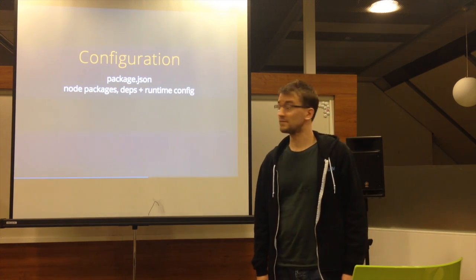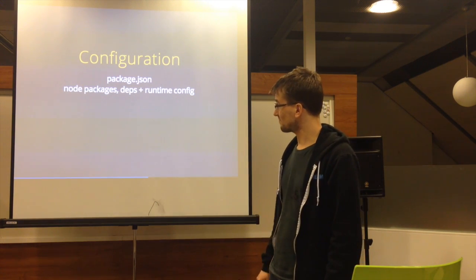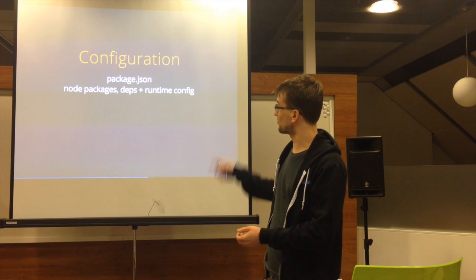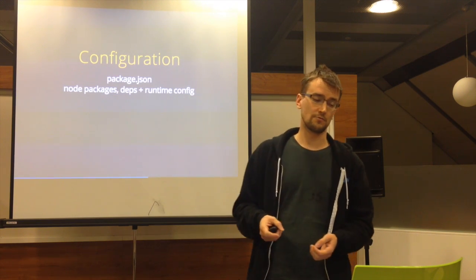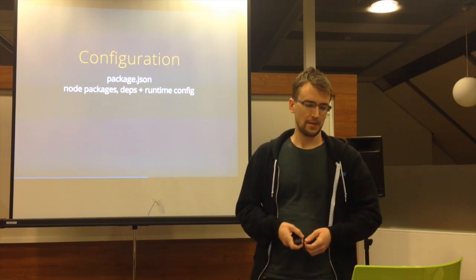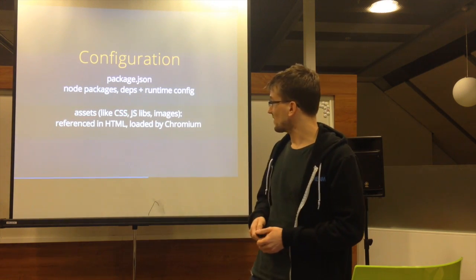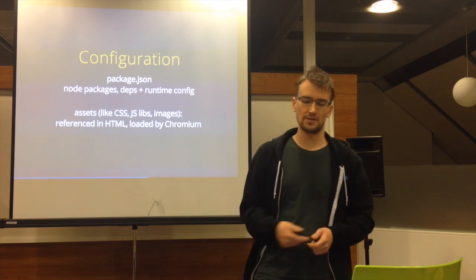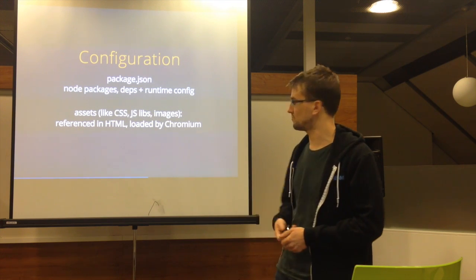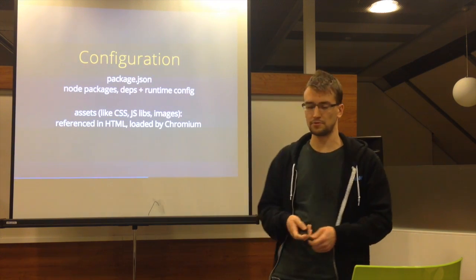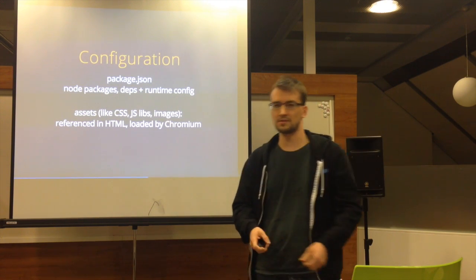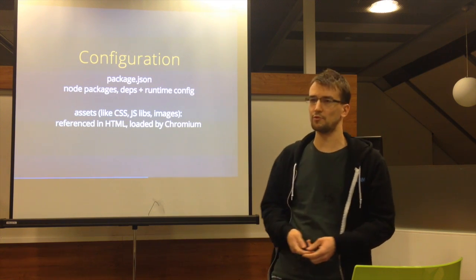Configuration is really easy. They use package.json, which is great because you can put your node packages and node dependencies next to the runtime configuration, which tells your application how big the window will be when you start it, whether it will have a Chrome toolbar, etc. Other assets like CSS libraries and images are referenced in HTML just like any website and loaded by Chrome just like any browser — you don't have to put an extra list in your package.json for images and CSS like you have to do in Adobe Air.